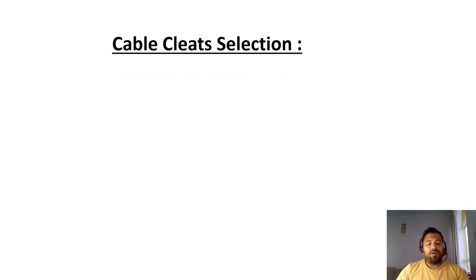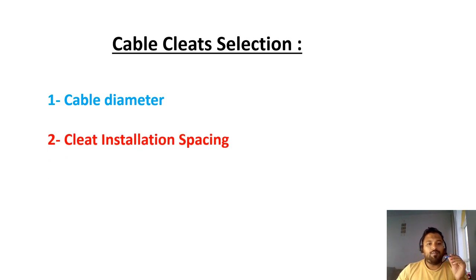Now we will see the cable cleat selection process. What are the things required while selecting cable cleats? First one we require cable diameter. So consider this is a cable. It has a diameter. So what is the diameter of that cable? Second thing is that cable cleat spacing installation. Between the cable you are installing between these two points, what is the spacing distance between the cleats?